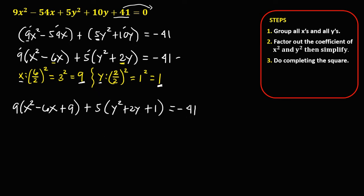Take note that the number added on the left side must also be added on the right side. For the x equation, we added 9, and since there is a number outside, we multiply 9 times 9 and add to the right side. For y, we added 1, so we add 5 times 1 to the right side.